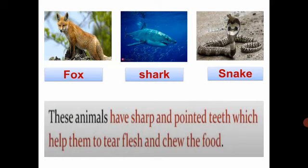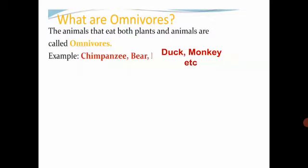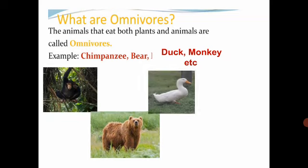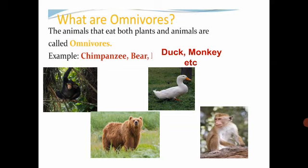These animals have sharp and pointed teeth which help them to tear flesh and chew the food. What are omnivores? The animals that eat both plants and animals are called omnivores. For example: Chimpanzee, Bear, Duck, and Monkey. These are omnivores — they eat both plants and animals.